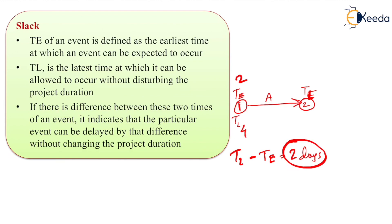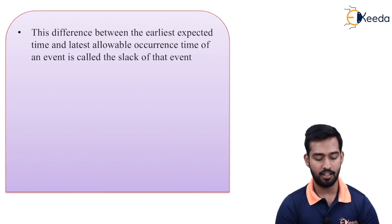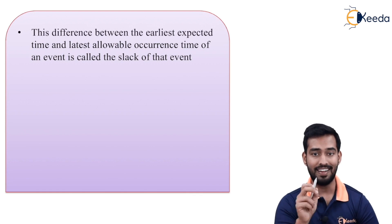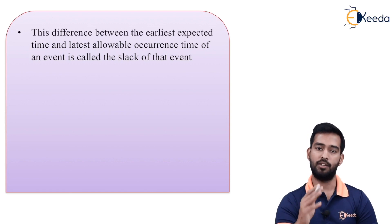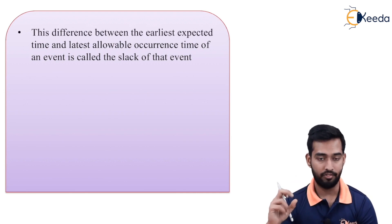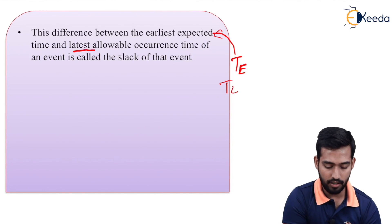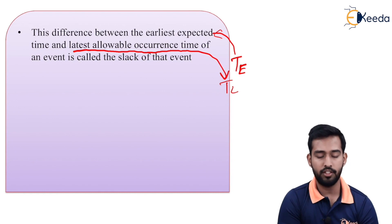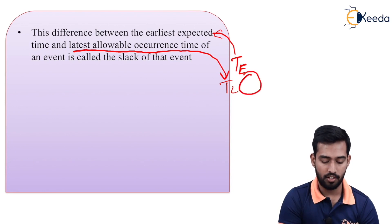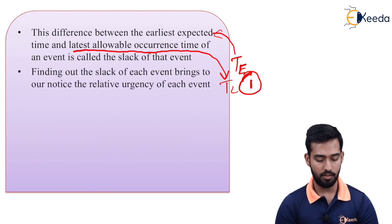This difference of two days exists within the project without disturbing the complete project duration — that is your slack. The difference between the earliest expected time Te and the latest allowable occurrence time TL of an event is called the slack of that particular event. So for each event, slack is different. Te is your earliest expected time and TL is your latest allowable occurrence time, and the difference between these two times for a particular event is its slack.